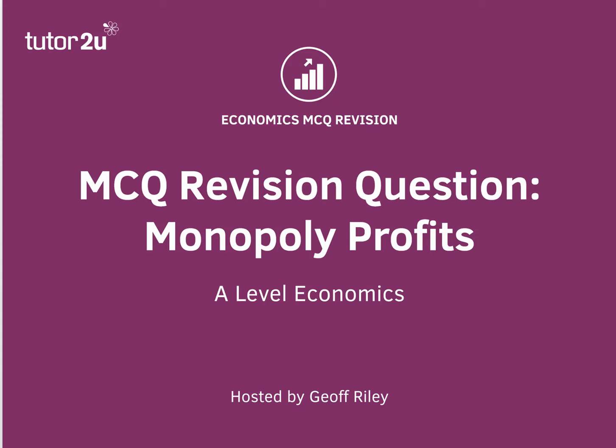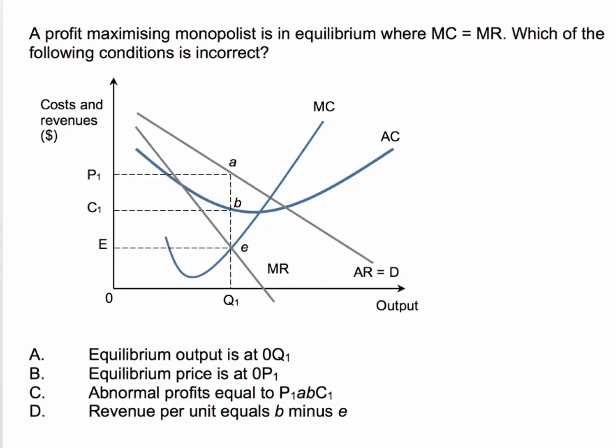Let's try another question. This question is on monopoly profits. It's a diagrammatic question. We're told a profit maximizing monopolist is in equilibrium where marginal cost equals marginal revenue.